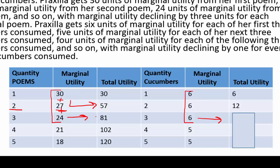Let's slide over and see what the total utilities are as we continue to consume. All three poems equal 81, all four equal 102, and we keep going as we consume more poems and more cucumbers — just adding incrementally. The cucumbers work the same way, continuing to grow as we consume more.